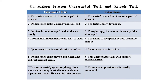Comparing undescended and ectopic testes: in undescended testis, the testis is arrested in its normal path of descent, whereas in ectopic testis it deviates from that path. The undescended testis is usually underdeveloped, while the ectopic testis is fully developed — this is the main difference. The scrotum is undeveloped and empty on that side in undescended testis, whereas in ectopic testis the scrotum is usually fully developed though empty. The spermatic cord may be short in undescended testis, but is usually longer in ectopic testis.